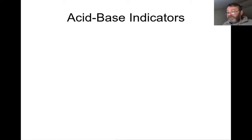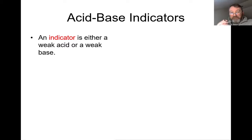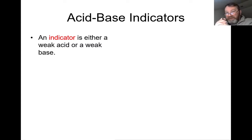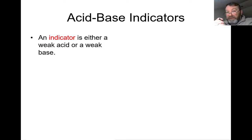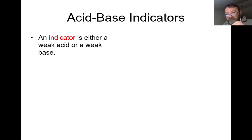An indicator is first and foremost either a very weak acid or a very weak base. The problem with weak acids and weak bases is that they do not dissociate fully in water — they are very bad dissociators, or in Bronsted-Lowry terms, bad proton donors and bad proton acceptors. They don't do an awful lot when put into solution, but they do enough to give a color change when used as a point of reference for the completion of a given reaction.